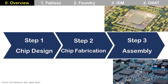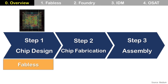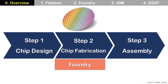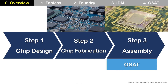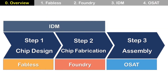Step three is assembly. This process involves packaging and includes testing as well. Chip design is done by fabless companies. Chip fabrication is done by Foundry. IDM does both chip design and chip fabrication. Assembly is done by OSAT. So each process and its players match like this.